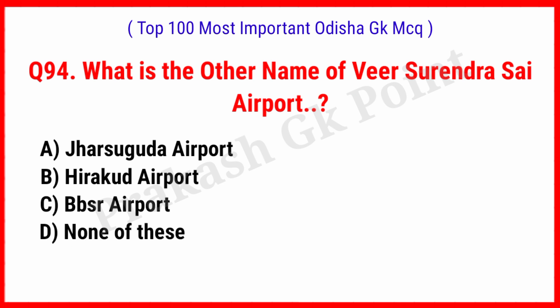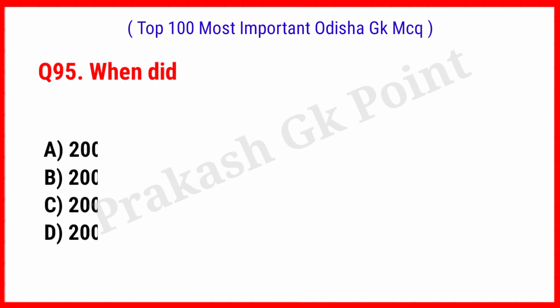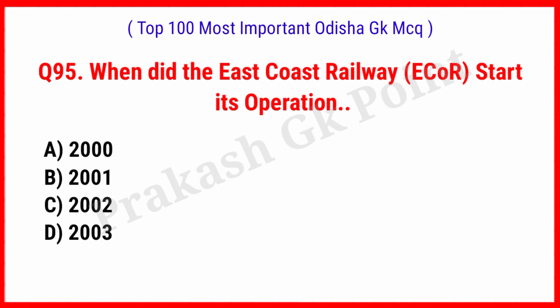What is the other name of the Veer Surendra Sai Airport? Answer: Option A, Jharsuguda Airport. When did the East Coast Railway start its operation? Answer: Option D, 2003.